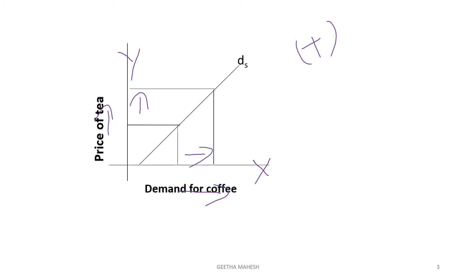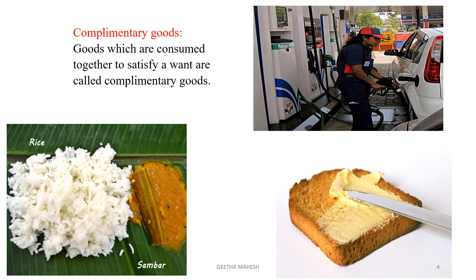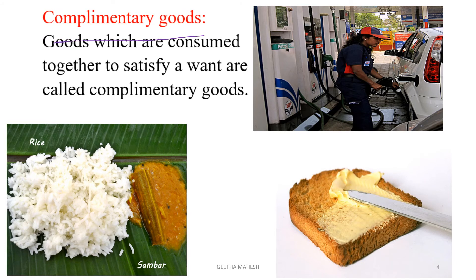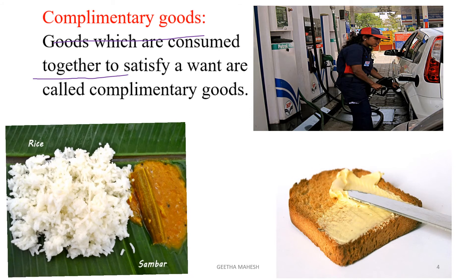Now let us understand complementary goods. Complementary goods are those goods which are consumed together to satisfy a particular want. Good examples are rice and sambal.